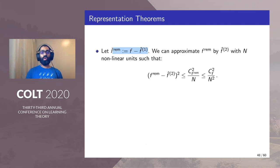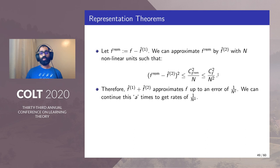So therefore we now estimate the reminder function with another neural network f̂₂ with n non-linear units such that the error of a reminder function with respect to f̂₂ is c_f²/n².